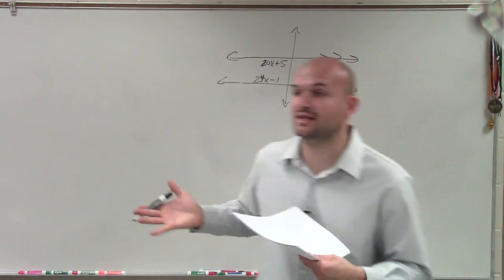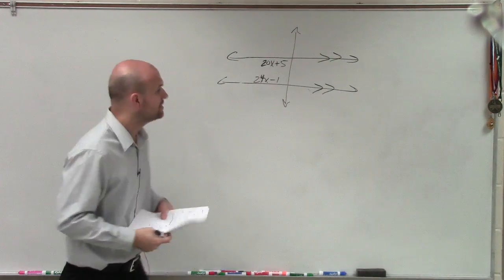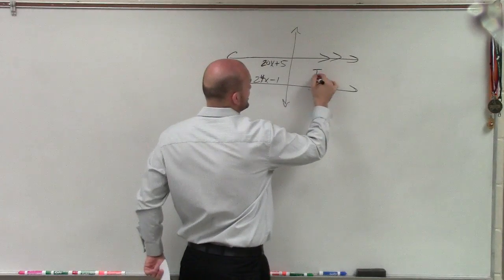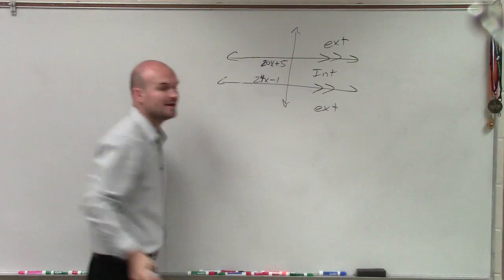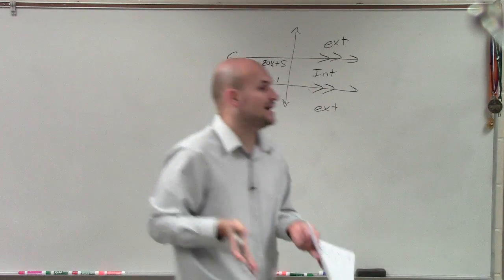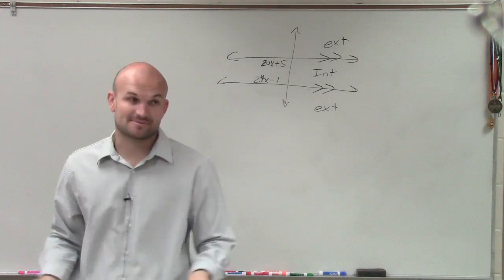So therefore, we know our angle relationships are going to have special relationships to each other. Are they going to be equal to each other, add up to 180? Now, I need to determine, are these interior or are these exterior? And obviously, you can see that they're between our parallel lines, so we call them interior. Are they on alternating sides or the same side? Same side.